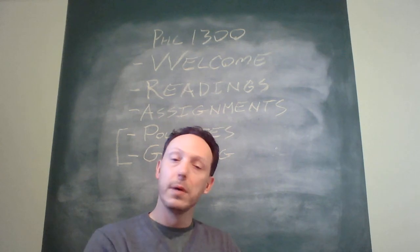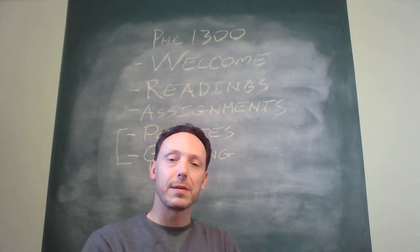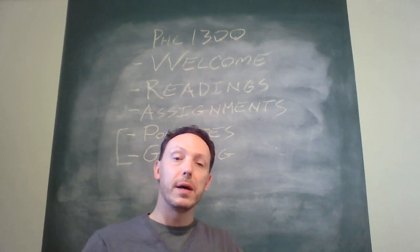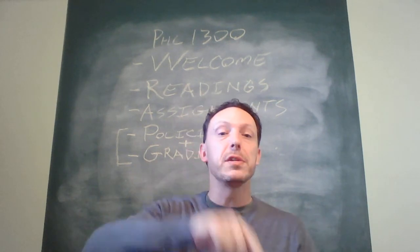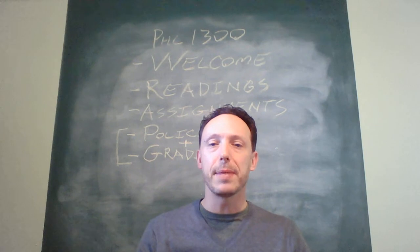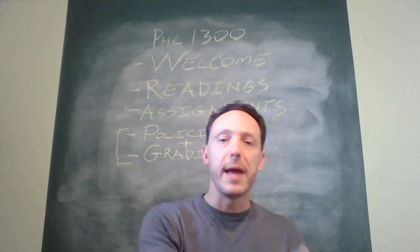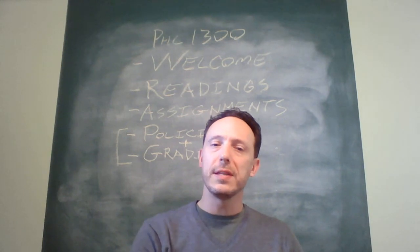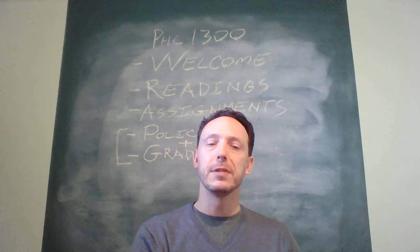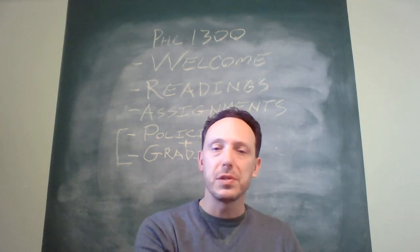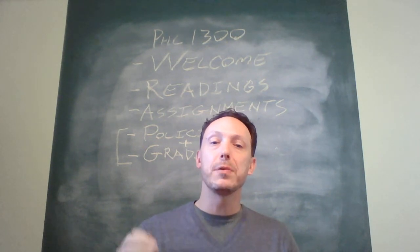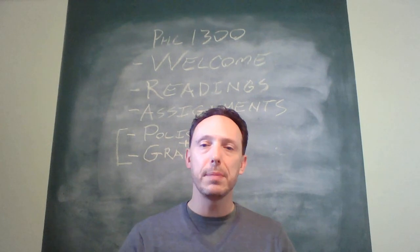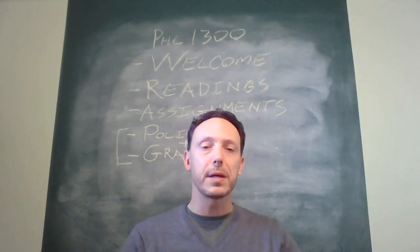That's section one on ancient approaches to ethics. Section two, we turn to the two big heavy hitters of modern ethical theory: Immanuel Kant and John Stuart Mill. It's going to be a bit jarring coming from Aristotle, who argues more or less that the reason you do the right thing is because you want to be happy. What we get from the modern approach to ethics is that these guys are more skeptical about human nature.